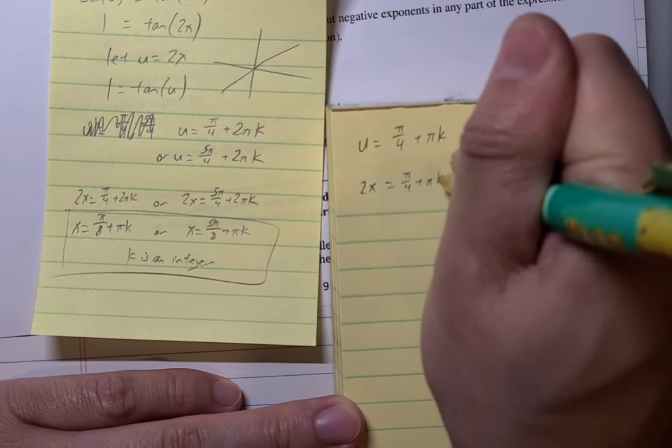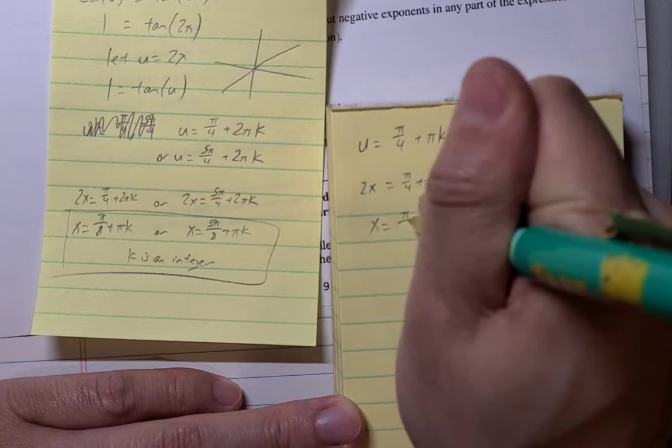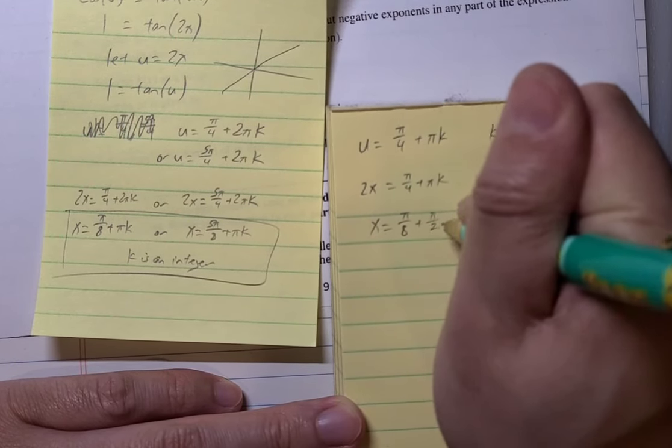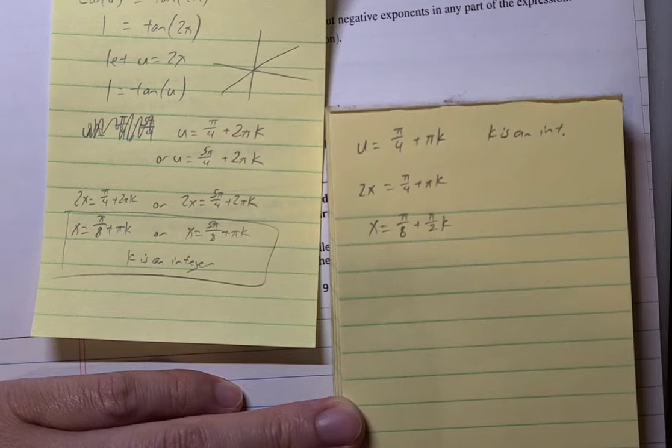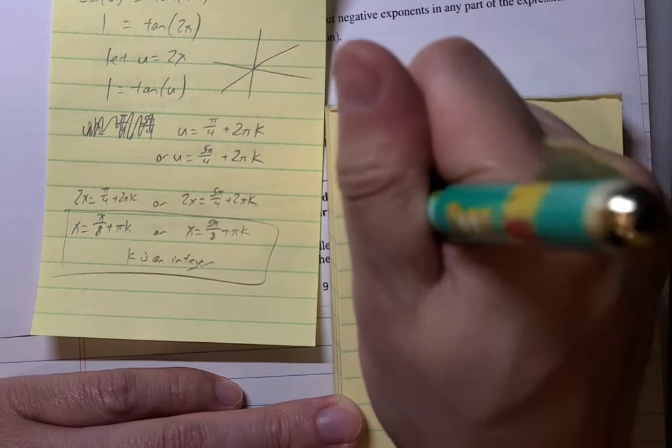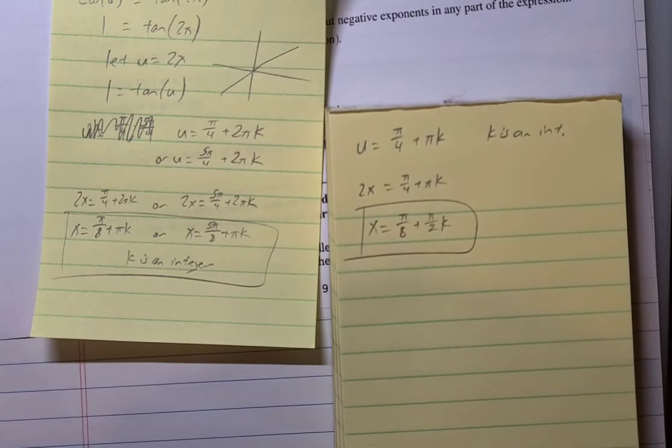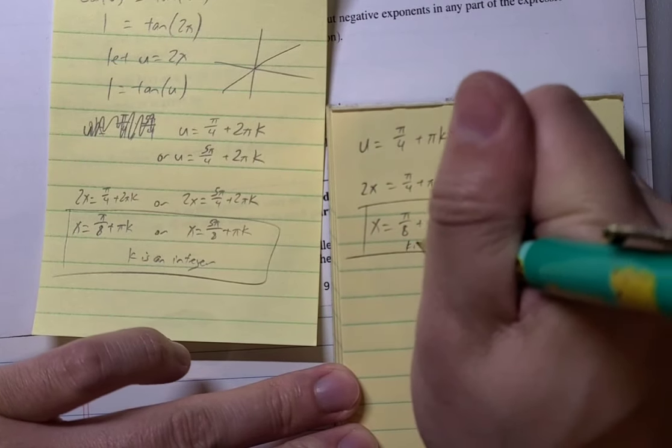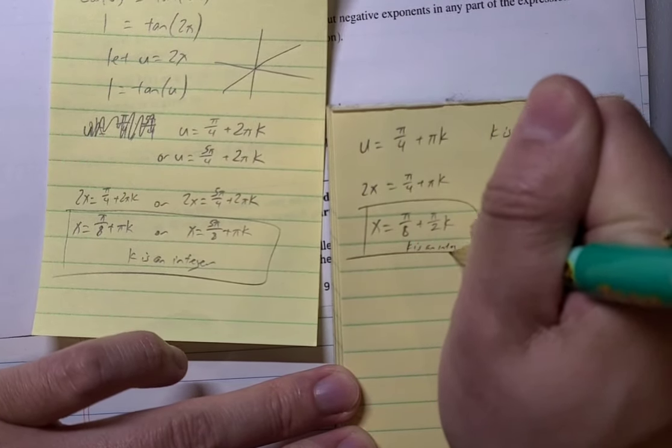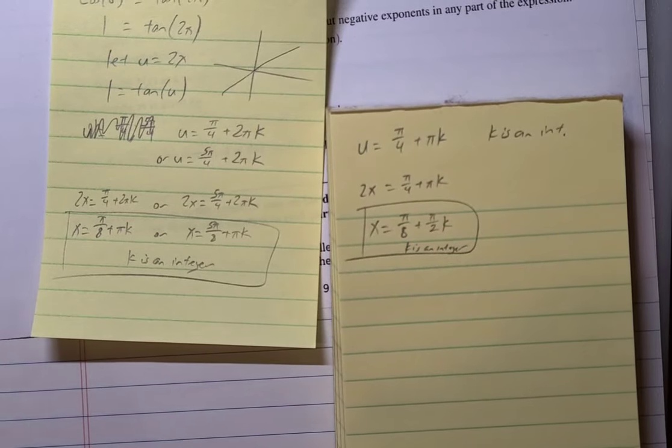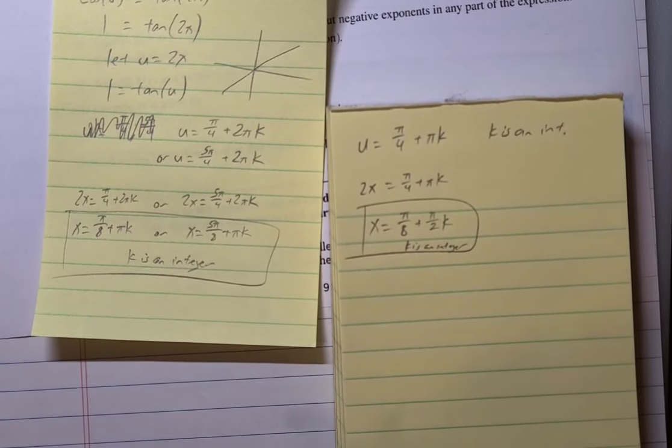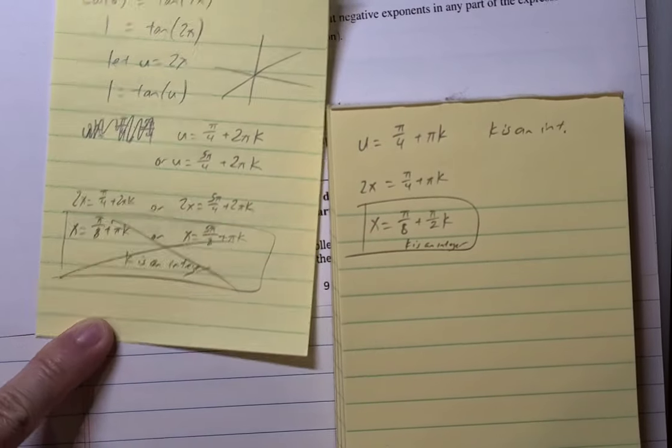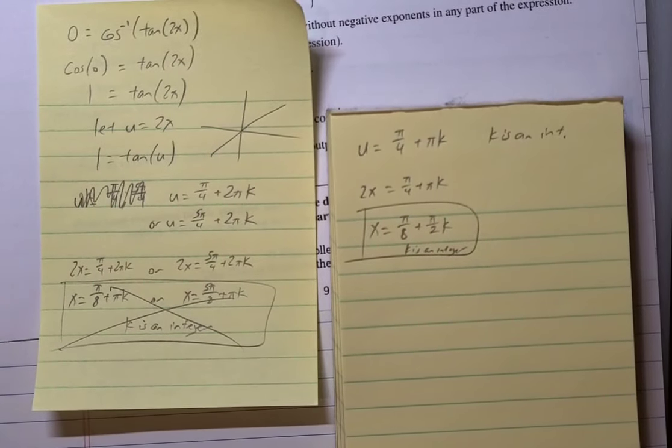X would be pi over 8 plus pi over 2k then as a result. Now I should write k is an integer also. I'm going to squeeze that in there. So this is a better answer actually, because this is just kind of repetitive actually. So abandon that, this is my better answer. This is my final answer now.